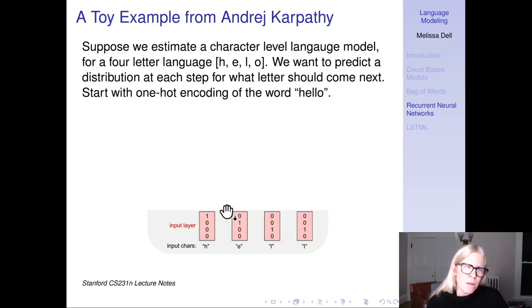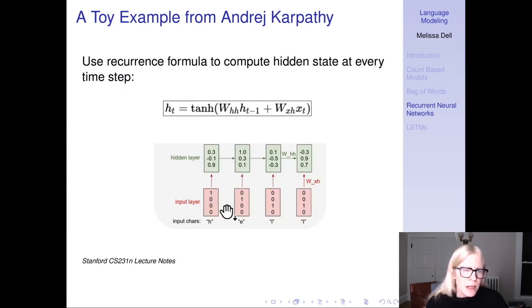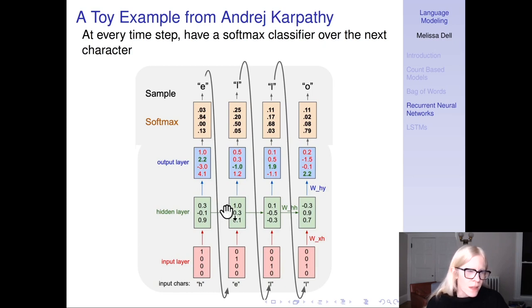This is a toy example from Andrej Karpathy, who I think is really the master of toy examples - I highly recommend him. Suppose we estimate a character-level language model for a four-letter language consisting of h, e, l, and o, and we want to predict a distribution at each step for what letter should come next. We can start with one-hot encodings, and then at each step we apply this function. That's the basic idea. At each step, you have an input layer, a hidden layer, and your output layer. You take the softmax over that to compute the most likely output, and then you can use that as the input to your next step. Again, you have a hidden layer and an output layer and take the softmax, and so on.